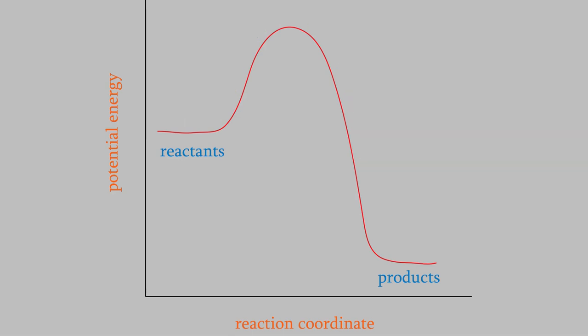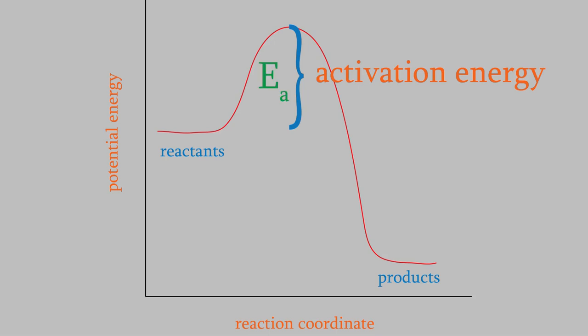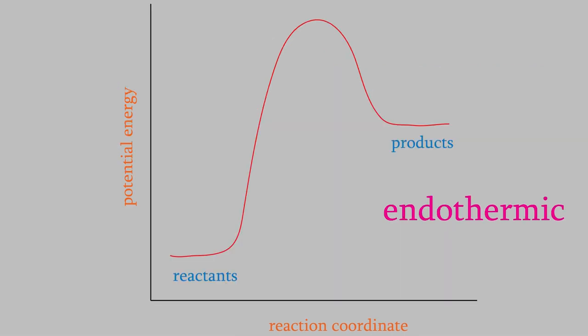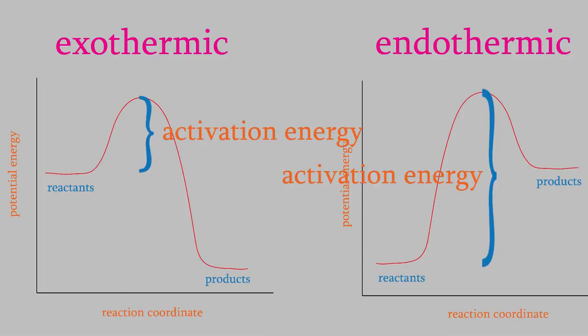So, in order for the reaction to happen, the reactant molecules must gain this amount of potential energy. The difference between these two energies is called the activation energy, and it has the symbol EA. In this particular example, notice that the products have a lower energy than the reactants. That means that, overall, the molecules lose energy in this example. When the molecules lose energy during a reaction, we say that the reaction is exothermic. So, what would this curve look like if the reaction were endothermic? In that case, the products would have a higher potential energy than the reactants. Notice that, in both cases, there's still an activation energy barrier that the reactants need to overcome in order to make the reaction happen.